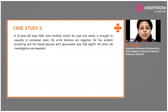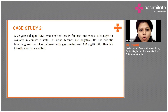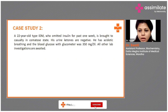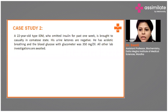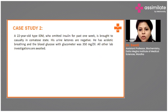This is a case of a 22-year-old with type 1 diabetes mellitus who omitted insulin for the past one week and is brought to casualty in a comatose state. His urine ketones are negative. He has acidotic breathing and the blood glucose with glucometer was 350 mg per deciliter.